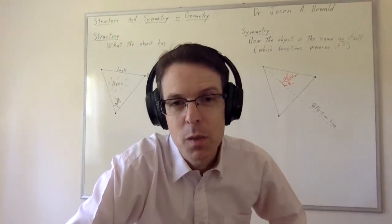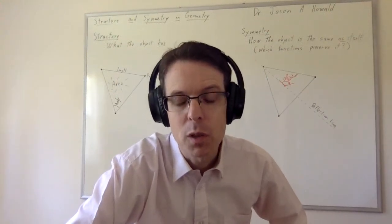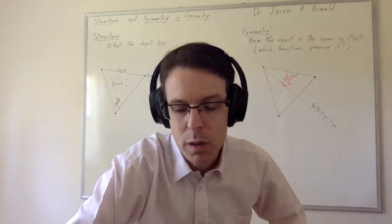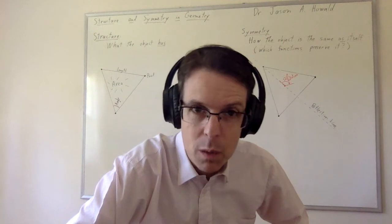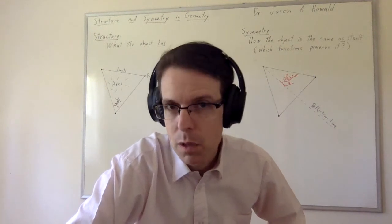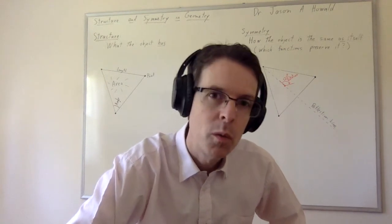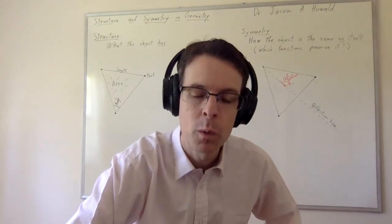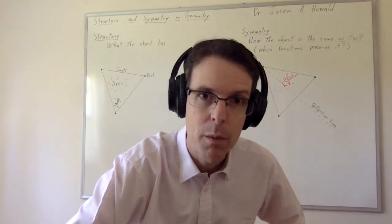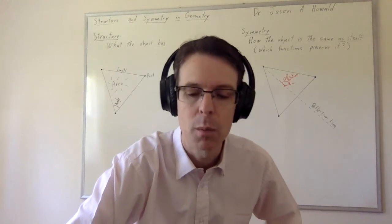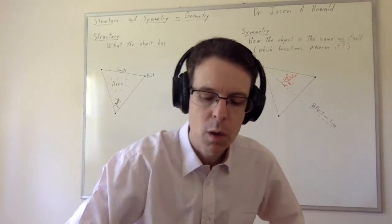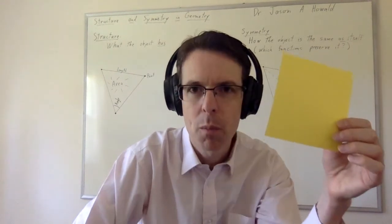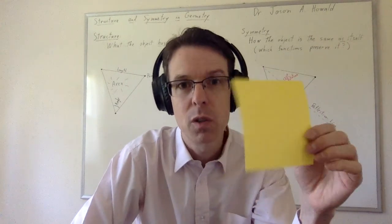In this video we're going to talk about structure and symmetry in geometry. We're going to begin with some simple shapes and then move on to the structure and symmetry of what we will call the affine plane in geometry. So let's start with the simplest shape of all, perhaps the square.